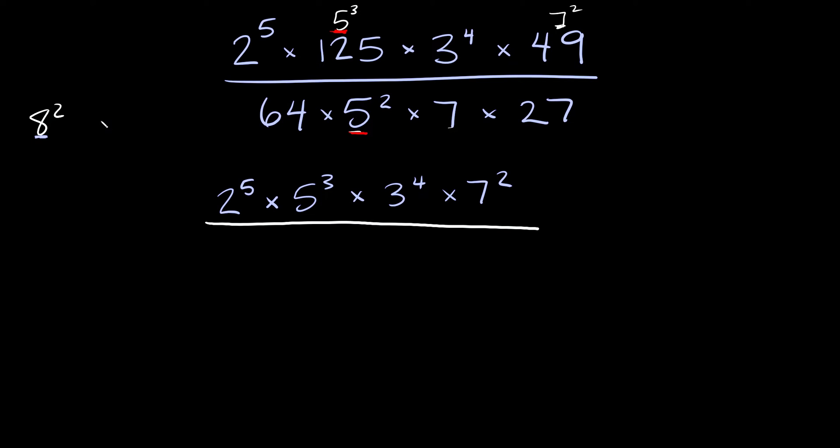But the thing is 64 is also the same thing as 2 to the sixth power. That'll be convenient because we'll have 2 on the bottom and we have a 2 on top already so 64 we're gonna rewrite as 2 to the sixth.